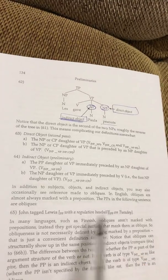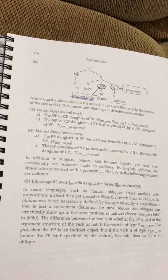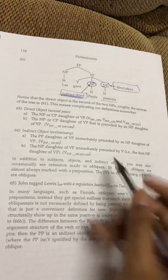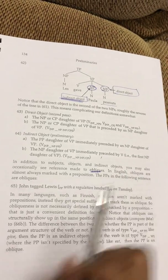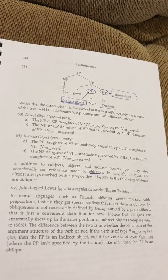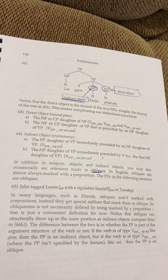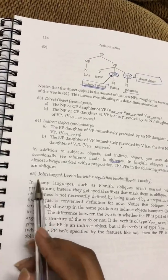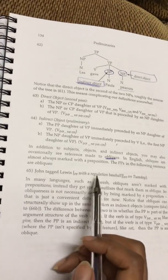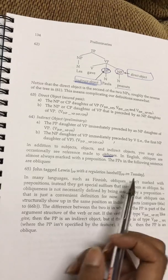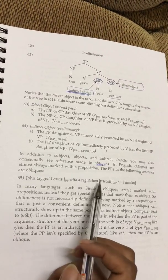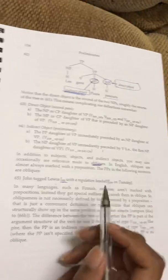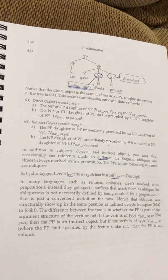In addition to subject, object, and indirect object, you may also hear reference to oblique cases. In English, oblique cases are almost always marked with a preposition phrase. The preposition phrases in the following sentence are obligatory: 'John tagged Lewis with a regulation baseball on Tuesday.' Here 'with a regulation baseball' and 'on Tuesday' are both preposition phrases functioning as obliques.